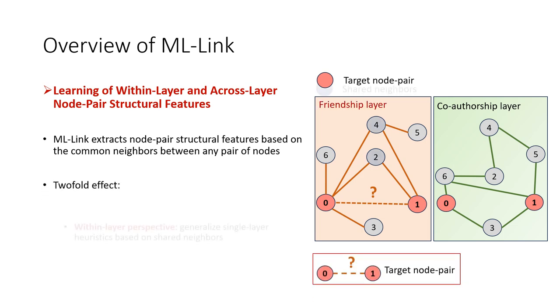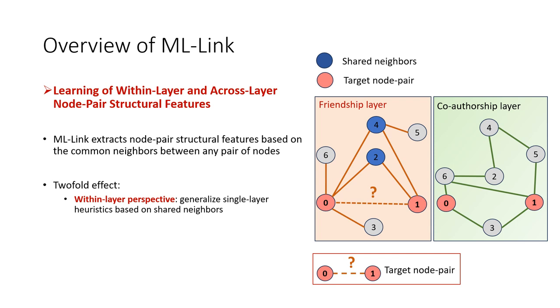Assuming that the target pair of nodes is 0-1 in the friendship layer, we exploit their internal common neighbors information. This enables us to generalize single-layer topological heuristics, such as Adamic-Adar.